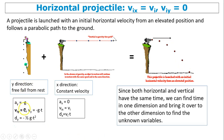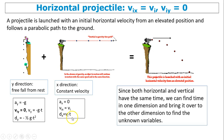In the vertical direction, it's free fall from rest. That means Viy equals 0, Ay is negative g, Vy equals negative g times t, and Dy equals negative one-half g t squared. In the horizontal direction, it moves with constant velocity. That means Ax equals 0, and velocity in the horizontal direction is constant, equal to the initial velocity. Dx equals Vix times t.